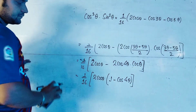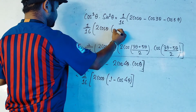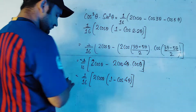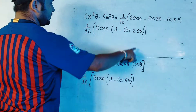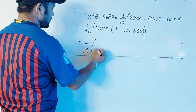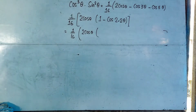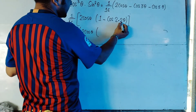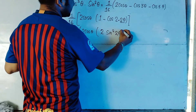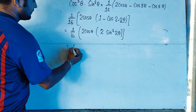We write 1/16 as it is with 2cosθ and (1 - cos4θ). Now, cos4θ can be written as cos(2·2θ), so (1 - cos4θ) becomes (1 - cos(2·2θ)). Applying the formula 1 - cos2θ = 2sin²θ with θ replaced by 2θ, we get 2sin²(2θ). So the expression becomes 1/16 times 2cosθ times 2sin²(2θ).